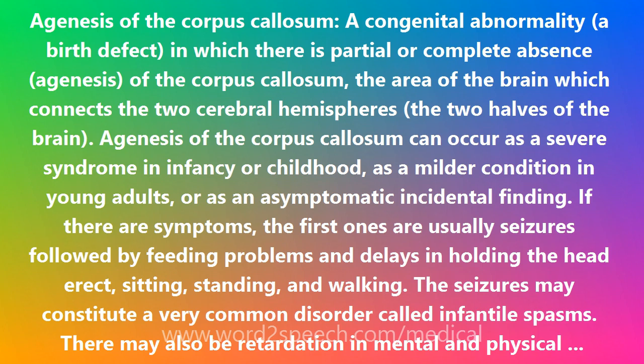In mild cases, symptoms such as seizures, repetitive speech, and/or headaches may not appear for years. Girls with Agenesis of the Corpus Callosum may have a specific condition called Aicardi syndrome, in which there is severe mental retardation and infantile spasms.